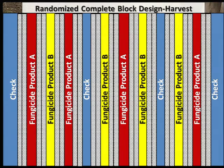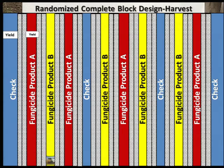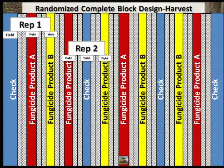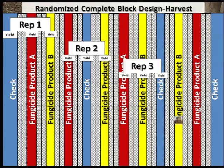To harvest this study, combine the center rows of each treatment, leaving the buffer rows on either side. In this example, the yield from the center eight rows of the untreated check would be compared to the yield from the center eight rows of Fungicide Product A, and the yield from the center eight rows of Fungicide Product B, to give you yield comparisons for rep 1. You would continue in this same manner, harvesting the center rows of each treatment for each rep throughout the field.